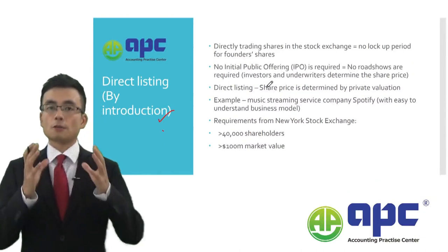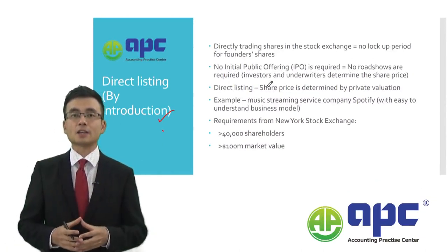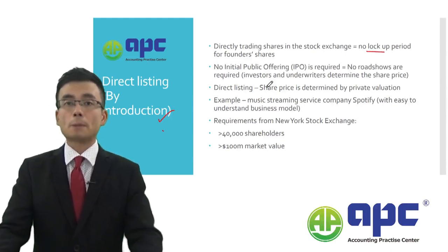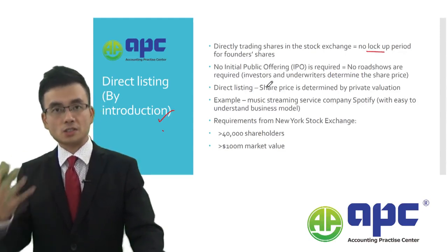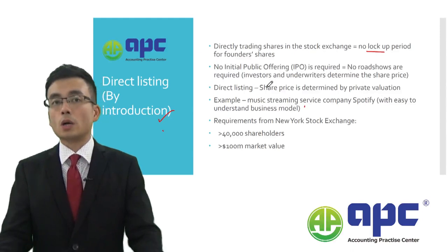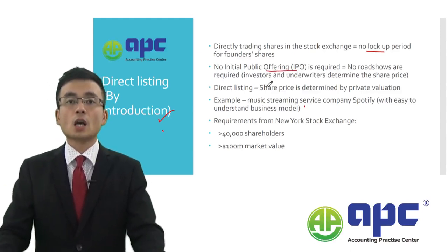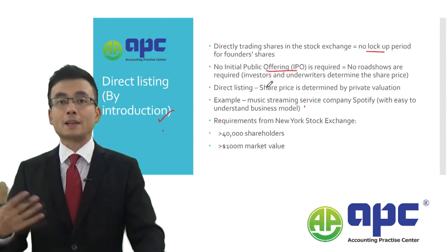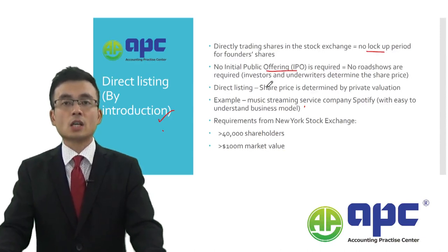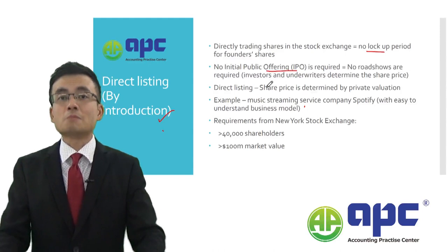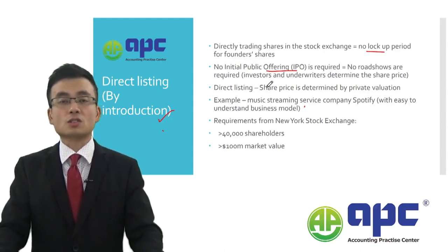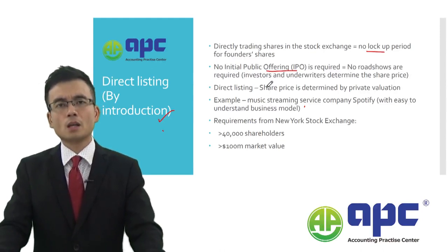What direct listing actually means is if your company wants to obtain a listing status but at the same time you don't want to lock up your shares for a period of three years. In most countries, if you're the founder or CEO of the company holding quite a lot of shares, and your company goes through an IPO or initial public offering to trade shares on the main stock exchange, it may take at least one year or up to three to five years. After your company has obtained a listing status, the shares you hold cannot be sold immediately — you will have to lock those shares up for perhaps another two to three years depending on which jurisdiction you are in. That's very time-consuming.